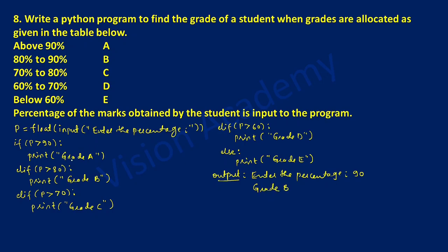What if I want to print grade A? The percentage should be greater than 90. If I write 91 then this condition will become true. So once again execute this program — it will ask the user to enter the percentage. At the second run I am going to enter 91. So 91 is stored in variable P. Now we check: 91 is greater than 90 — yes, condition is true. Then grade A will be printed.